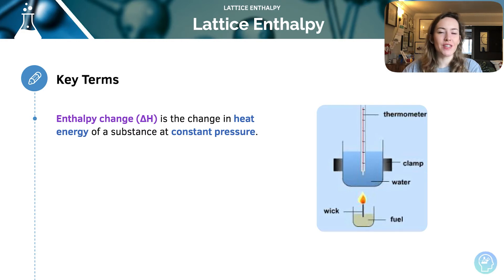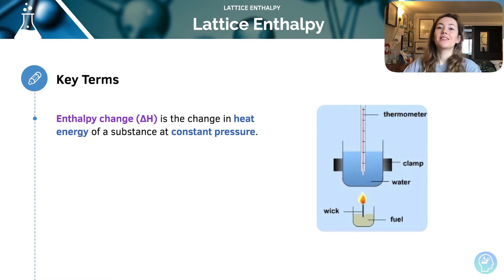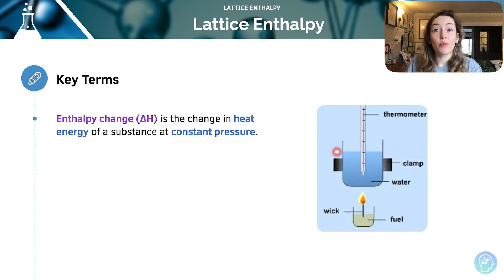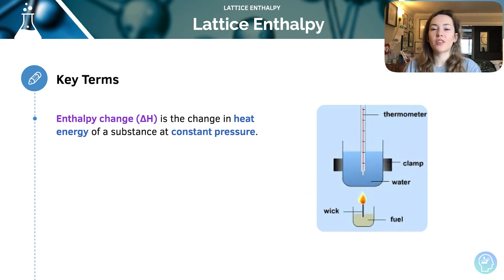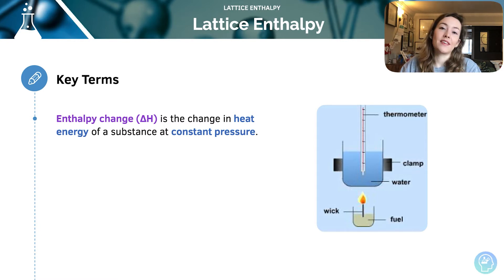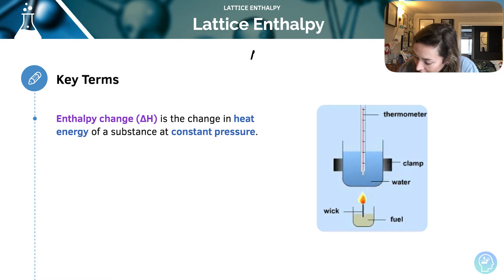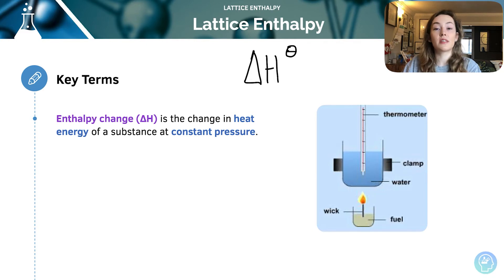We'll look more closely at the definitions in detail in the next lesson, but let's introduce enthalpy change again. It is the change in heat energy of a substance at constant pressure. Here's an image you may well recognise — this is calorimetry, so we're directly measuring an enthalpy change experimentally, using Q = mcΔT. If the enthalpy change is measured under standard conditions of temperature and pressure, we call it the standard enthalpy change, noted as delta H with a little theta sign, indicating standard conditions.